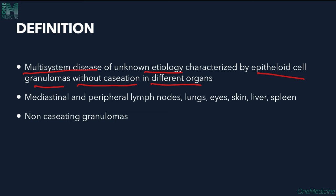In the skin, these granulomas are also present. Mediastinal and peripheral lymph node enlargement is seen. Lungs, eyes, skin, liver and spleen are involved, and there are non-caseating naked granulomas present here. 'Naked' meaning there is no peripheral mantle of lymphocytes present.